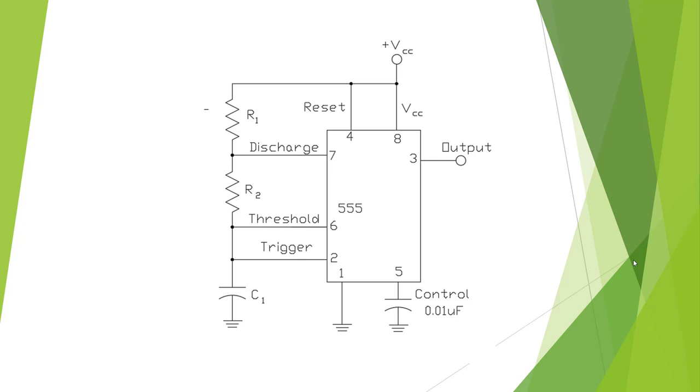Here's the schematic for the astable. The astable timer will put out a continuous pulse of frequency and pulse width that we design based on these two resistors and this capacitor. And you can tell this is the astable because we have two resistors and one capacitor.